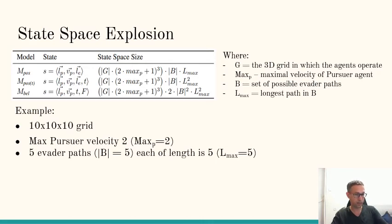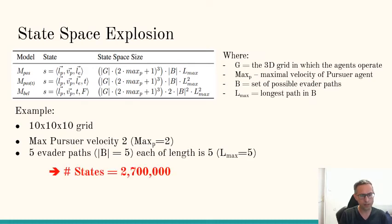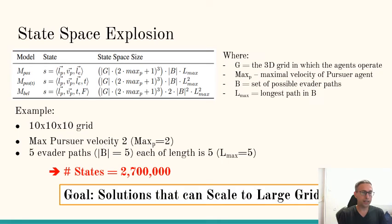Let's assume we have a 10 by 10 by 10 grid, which is not a large grid, and the pursuer's maximum velocity is 2, and everything is discretized. So it's minus 2, minus 1, 0, 1, and 2 for each of the three dimensions. And the evader has five paths, each of length five. So this is a very simple and small problem. Even for this problem, the number of states in the belief-based MDP is almost a million.